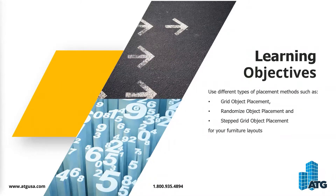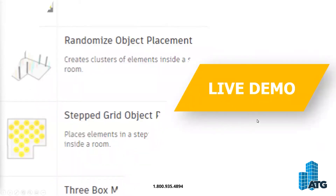Our learning objectives for today are to utilize the different types of placement methods built into the standard Generative Design processes. These include the grid object placement, which generates alternative options for placing objects in a room using a rectangular grid; the random object placement, which generates alternatives by randomly placing objects in a defined space; and the stepped grid object placement, which generates alternatives using a stepped or offset grid pattern. With that, let's go into our live demo.